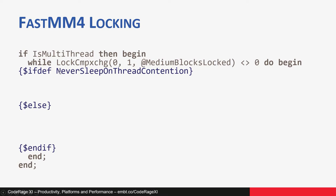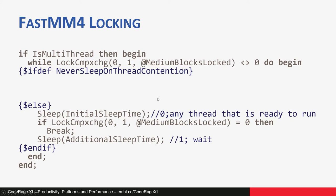If NeverSleepOnThreadContention is not defined (which is the default), FastMM first calls Sleep(0). This allows Windows to switch to any other thread that is ready to run. After that, the code again tries to lock. If it fails again, it will sleep for one millisecond, definitely putting the program to sleep. Then this all repeats.